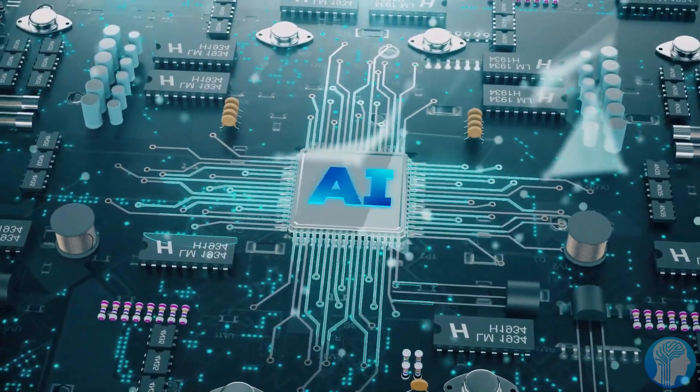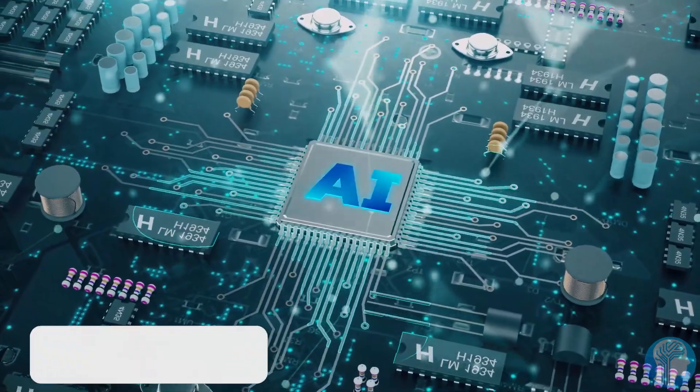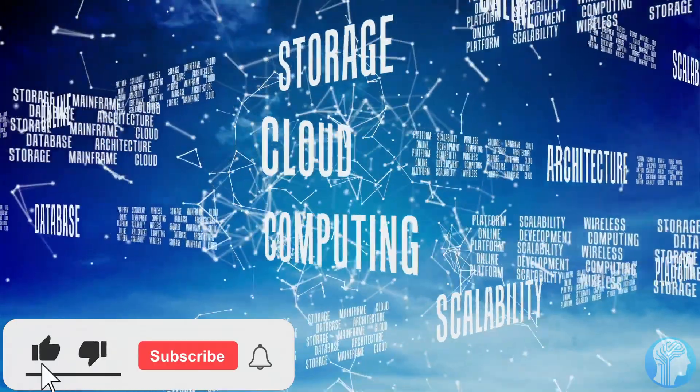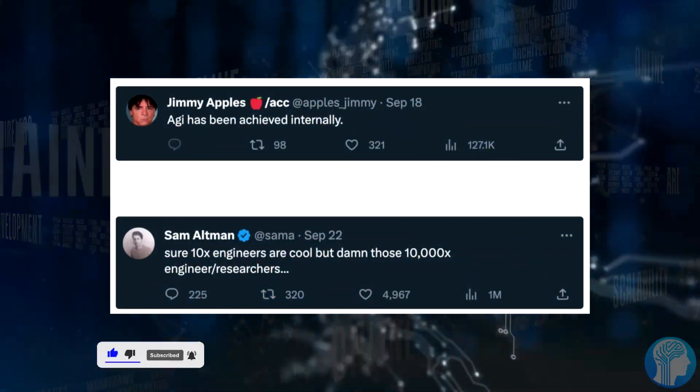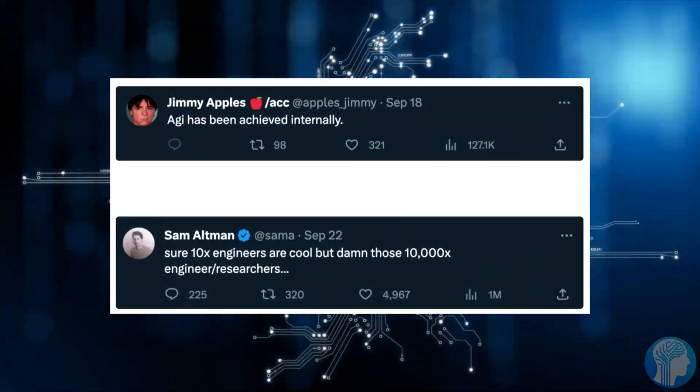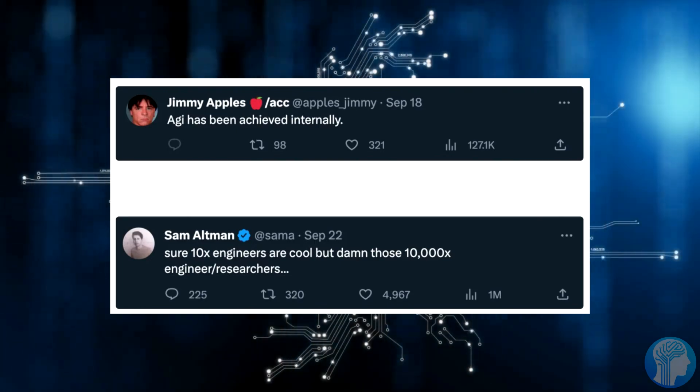But let's rewind a bit. Just a few months ago, the infamous Jimmy Apples, known for his uncanny ability to unveil industry secrets, dropped a bombshell. According to his leak, OpenAI had achieved artificial general intelligence, AGI, internally.